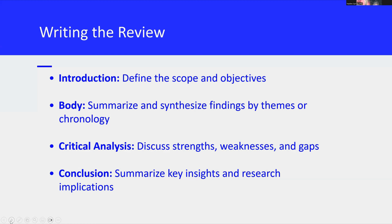Offer a critical analysis of the literature — discuss the strengths and weaknesses of the studies you reviewed, and identify any gaps or limitations in the research. This analysis helps to contextualize your findings and highlight the value of your review. Conclude by summarizing the key insights from your literature review and discussing the implications of these findings for your own research and your specific field. This section should tie everything together and provide a clear sense of the overall contributions of the reviewed literature.